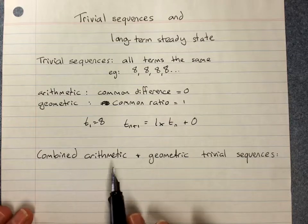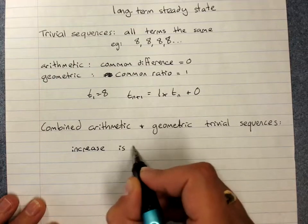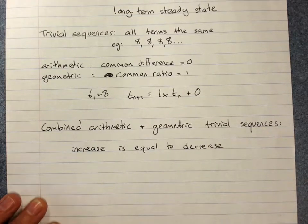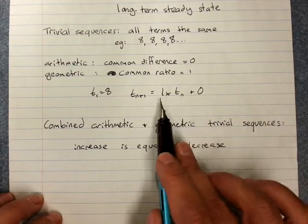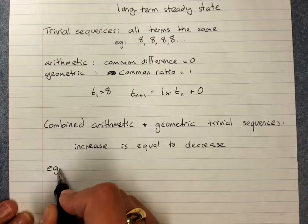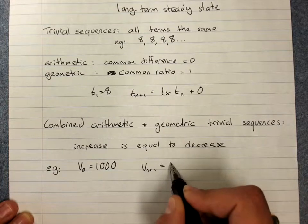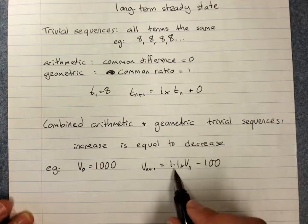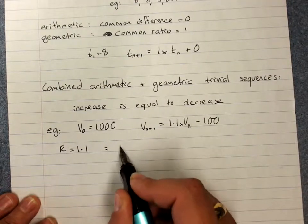For combined arithmetic and geometric trivial sequences, the increase is exactly equal to the decrease. You can have combined ones without it having to be exactly a common difference of 0 and common ratio of 1, as long as the increase equals the decrease. For example, starting term of 1000, with geometric growth and arithmetic decay.